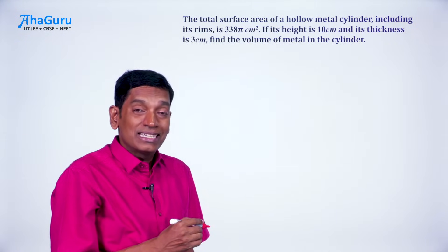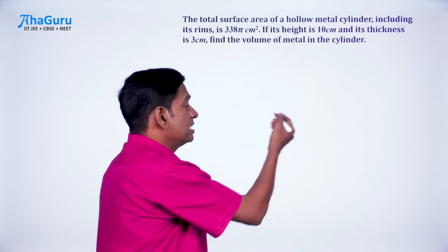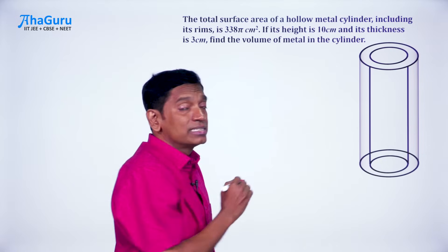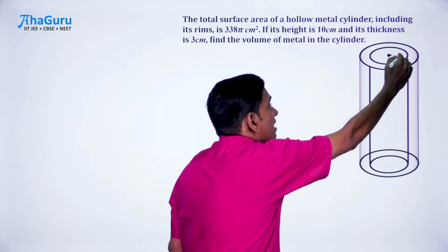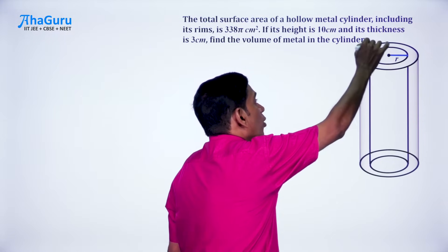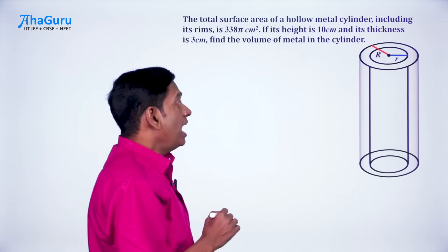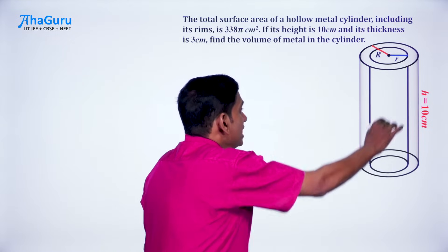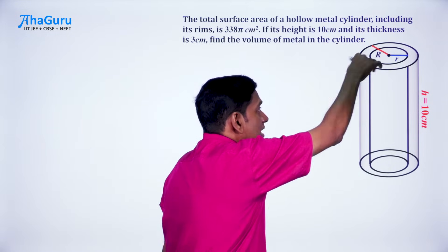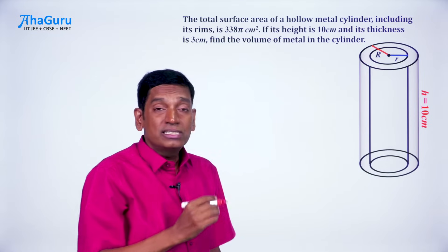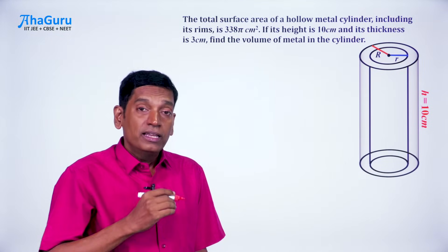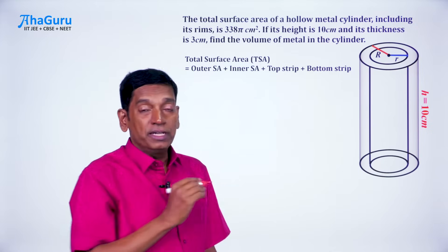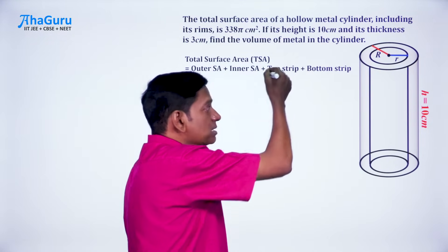How do we go about solving such questions? Let's start with what is known. We are given a cylinder — but this is not just any cylinder, it is a hollow metal cylinder. That means it is going to have an inner radius small r and an outer radius capital R, and we are also given that its height is 10 centimeter. The total surface area is going to have four components: outer, inner, top strip, and bottom strip.